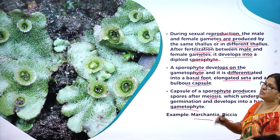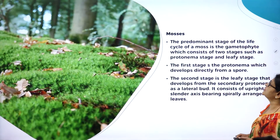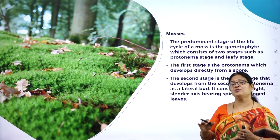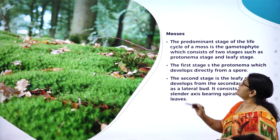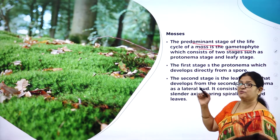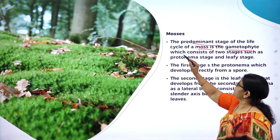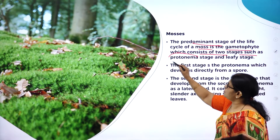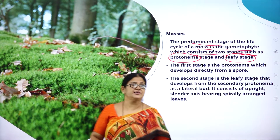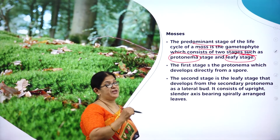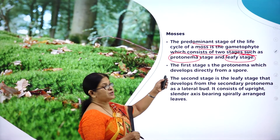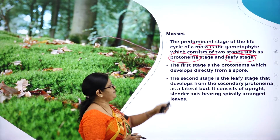Now let us study about mosses. Mosses appear like a green carpet. The predominant stage of the life cycle of moss is the gametophyte, which consists of two stages: the protonema stage and the leafy stage.